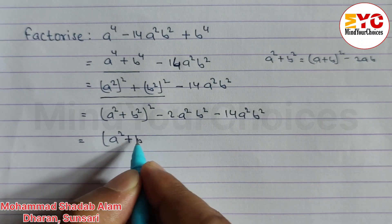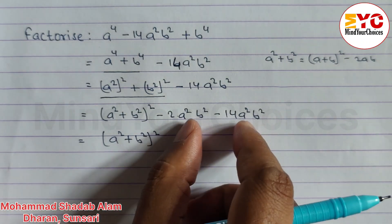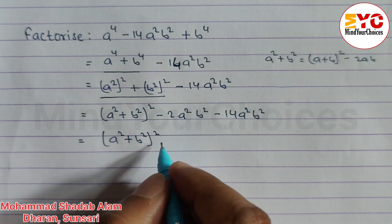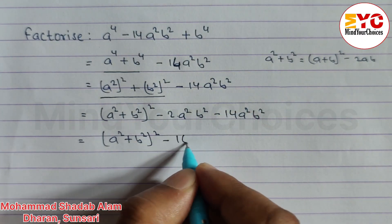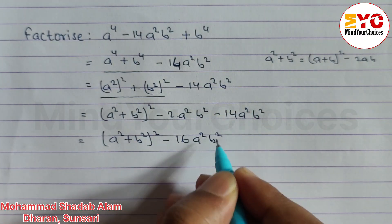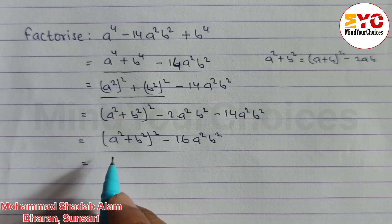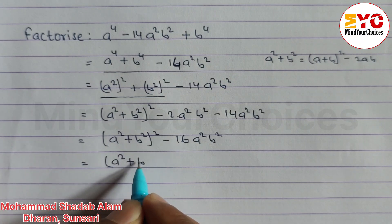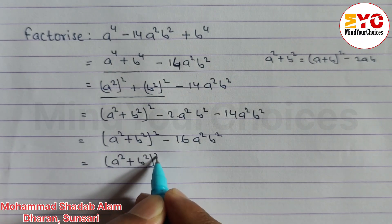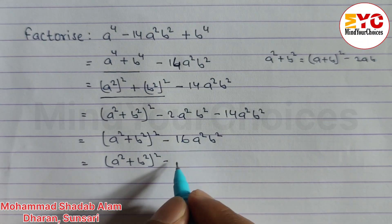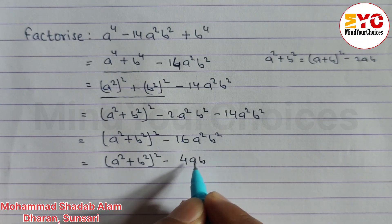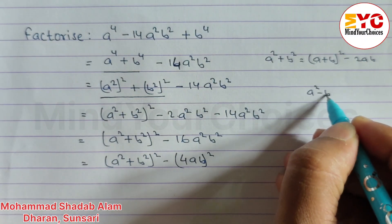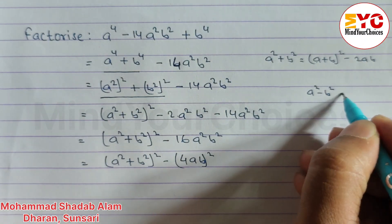These two are like terms, so we can combine them: minus 2 and minus 14 gives minus 16 a square b square. Now we have to convert this into the form of a square minus b square. We can see: a square plus b square whole square minus 4ab whole square, since the square root of 16 is 4.